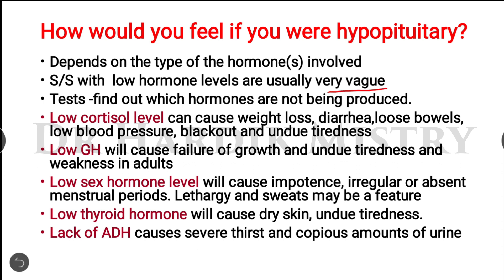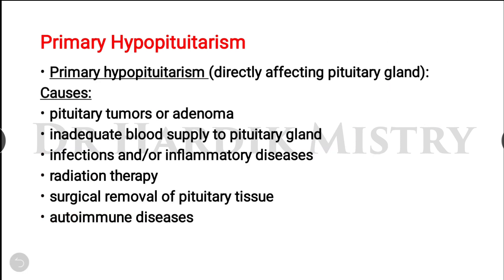Signs and symptoms of hypopituitarism depend on which hormones are involved. Low cortisol causes weight loss, diarrhea, low blood pressure, blackouts, and undue tiredness. Low growth hormone causes failure of growth, tiredness, and weakness in adults. Low sex hormones cause impotence, irregular or absent menstrual periods, and lethargy. Low thyroid hormone causes dry skin and tiredness. Low or absent ADH causes severe thirst and copious urination.